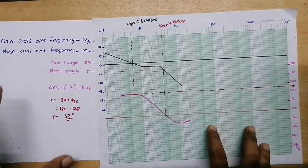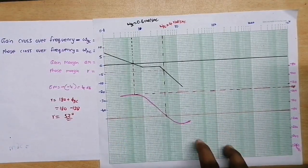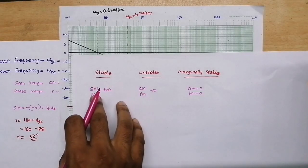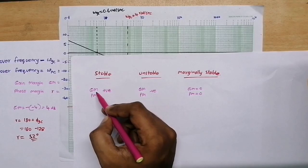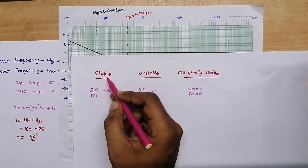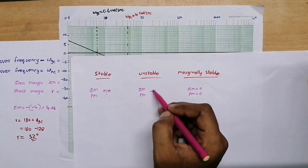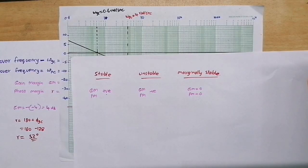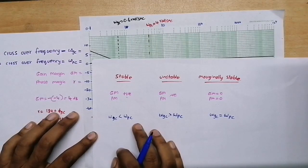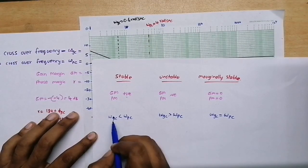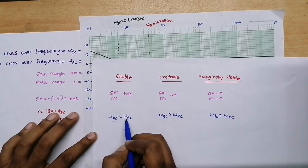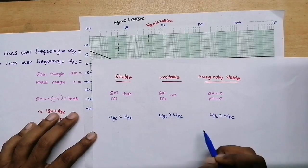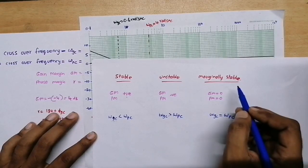Now, why we draw the Bode plot — it is for finding stability of a system. For stability from gain margin and phase margin: if both gain margin and phase margin are positive, the system is stable; if any one value is negative, the system is unstable; if both are zero, the system is marginally stable. From gain crossover frequency and phase crossover frequency: if gain crossover frequency is less than phase crossover frequency, system is stable; if greater, system is unstable; if both are equal, system is marginally stable.